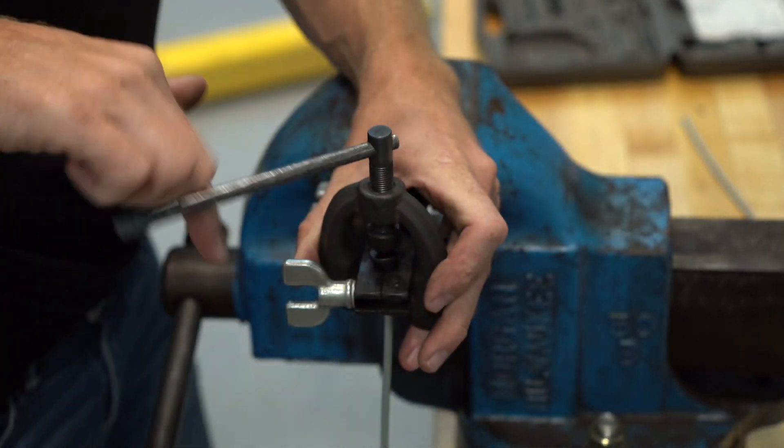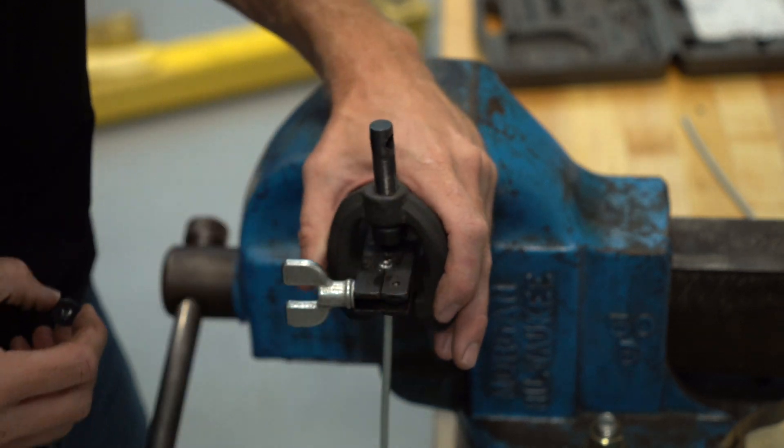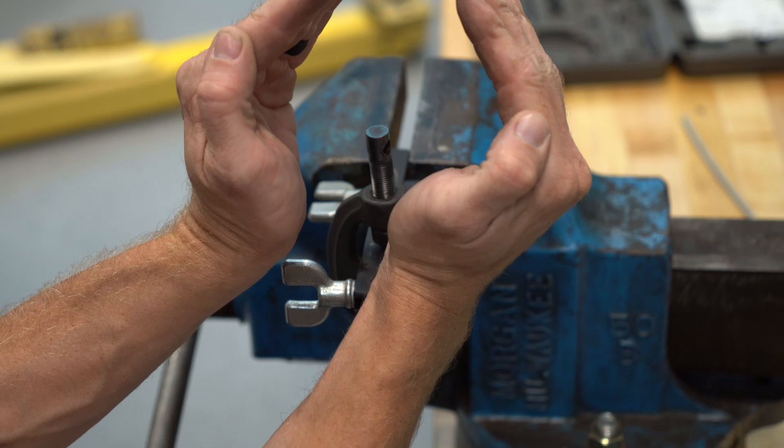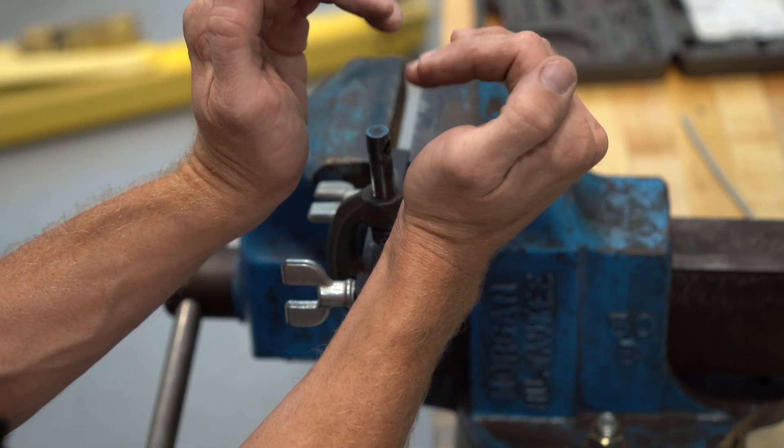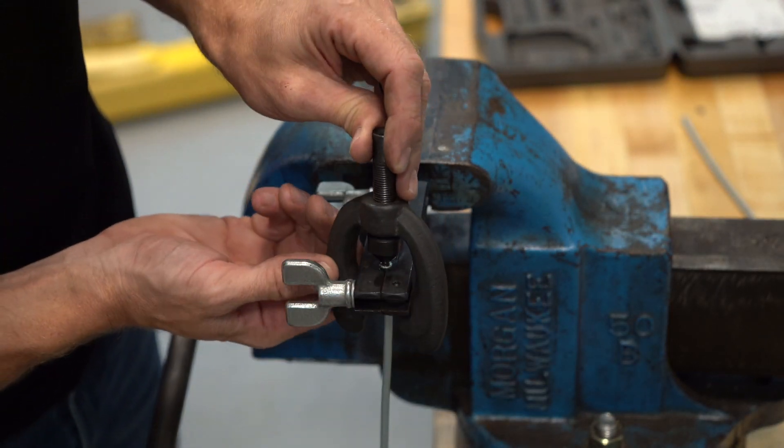We'll back this off and remove the forming die. What it's done to the end of the line is it's taken the line and crushed it down a little bit. Now we're going to go back with the cone and flatten it. The cone is already part of the tool.